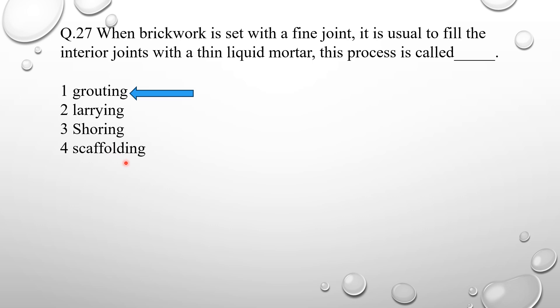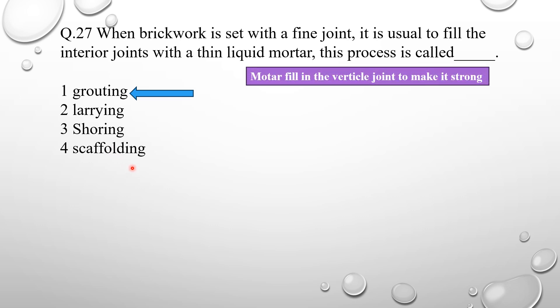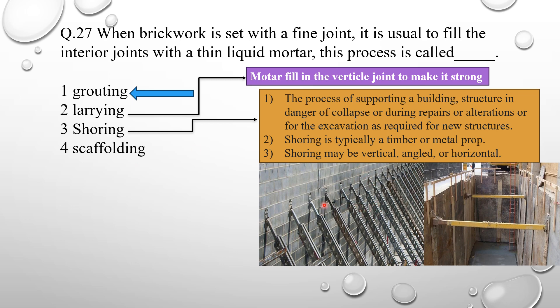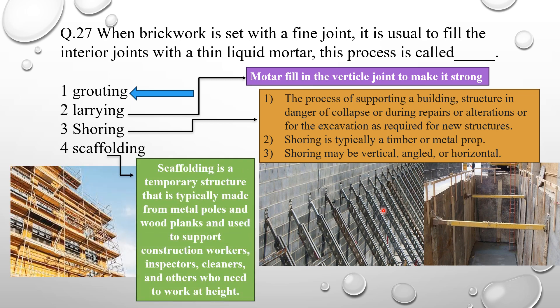Let's discuss the remaining options. Laring is the mortar filled in the vertical joints to make it strong. Shoring refers to inclined or horizontal supports, typically made from timber and metal props, used to support buildings and structures that are in danger or undergoing repair, alterations, or excavation. Scaffolding is a temporary structure made with metal poles or wooden planks to support construction workers and inspectors who need to work at height.